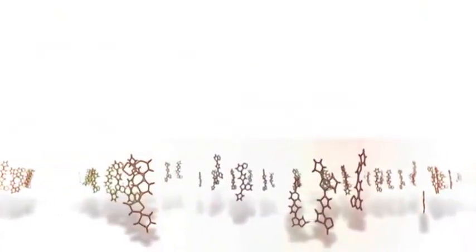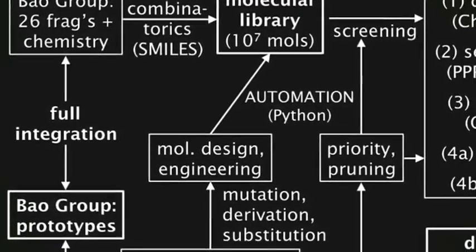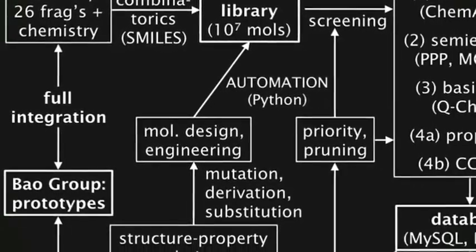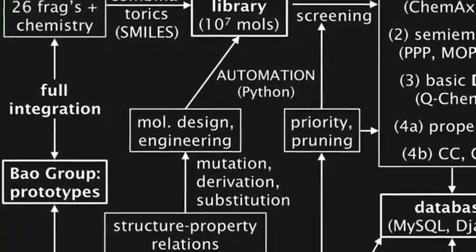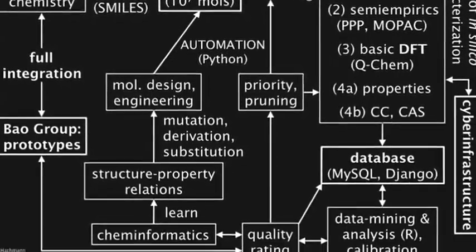The Clean Energy Project is a theory, computation, experiment, and grid computing effort that tries to solve the problem of generating high-efficiency organic photovoltaics by guiding experimental synthesis with a massive survey of candidate materials. The motivation for writing this perspective is to give people an overview of all the different layers and complexities of the Clean Energy Project before we start publishing specific papers on specific issues.